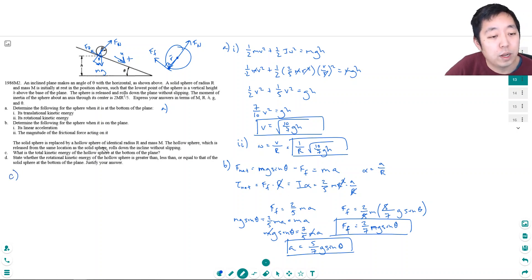Now the solid sphere is replaced by a hollow sphere of identical radius R and mass M. The hollow sphere, which is released from the same location as the solid sphere, rolled down the incline without slipping. So for a hollow sphere, the rotational inertia is equal to two-thirds Mr squared. What is the total kinetic energy of the hollow sphere at the bottom of the plane?